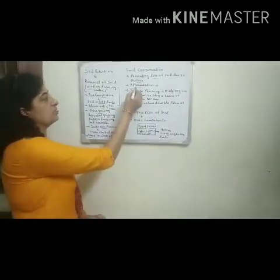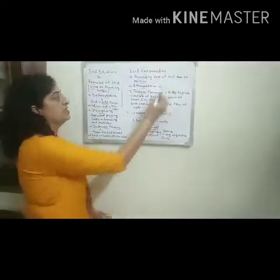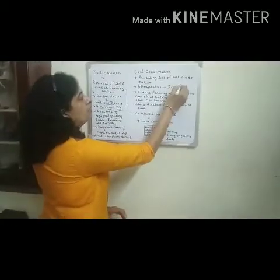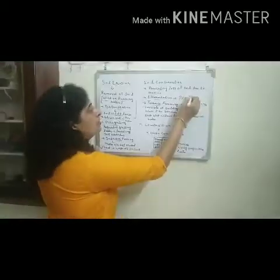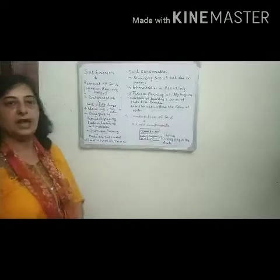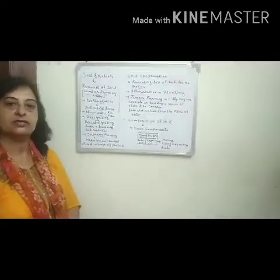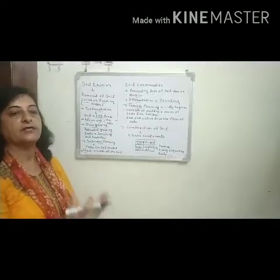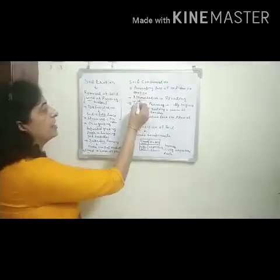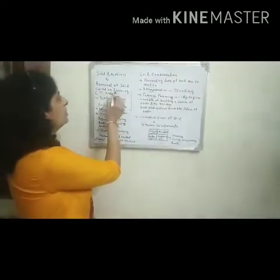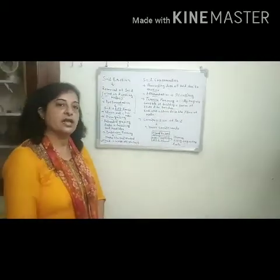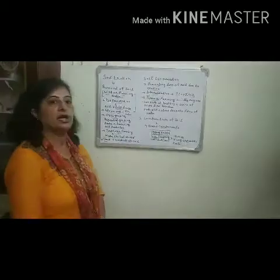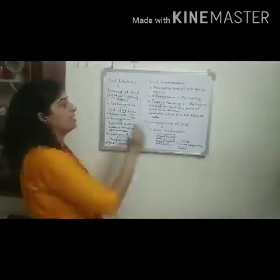Afforestation means planting more and more trees. The roots of plants hold the soil firmly, so more plants means more roots holding the soil, making it difficult for wind or water to carry the soil away. More plants reduce the rate of soil erosion.